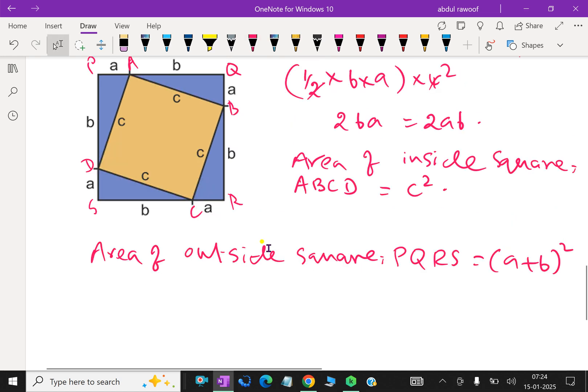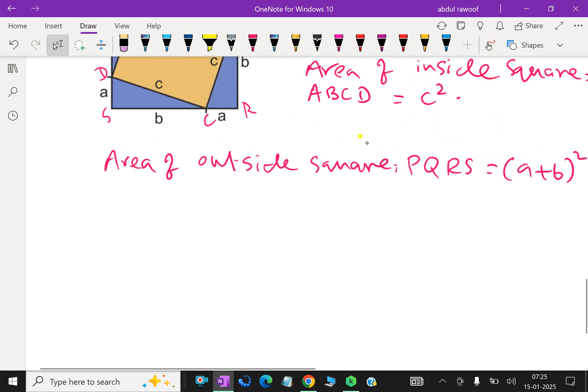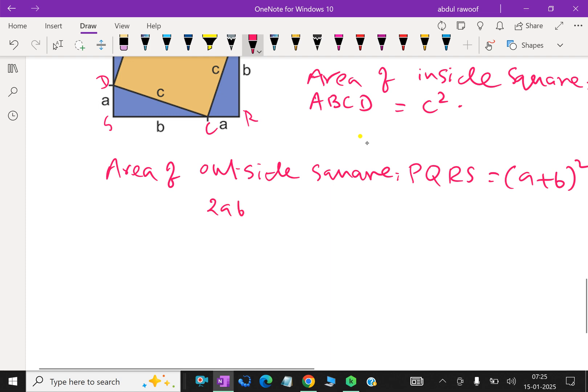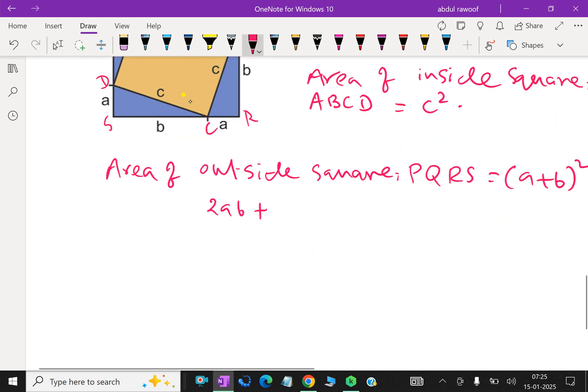Now look at here, this area of the outside square is formed by area of the inside square plus area of the four congruent triangles, which is equal to area of four triangles 2AB plus area of inside square C². So (A + B)² is the area of outside square.